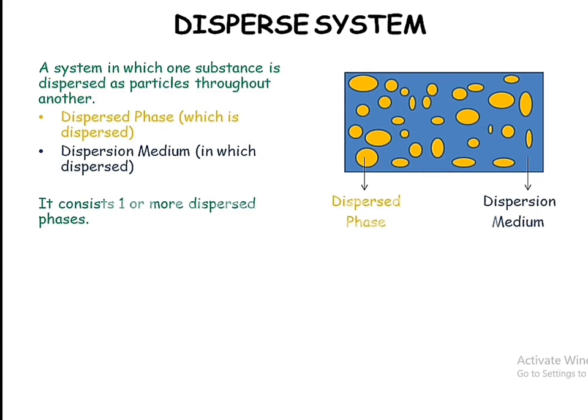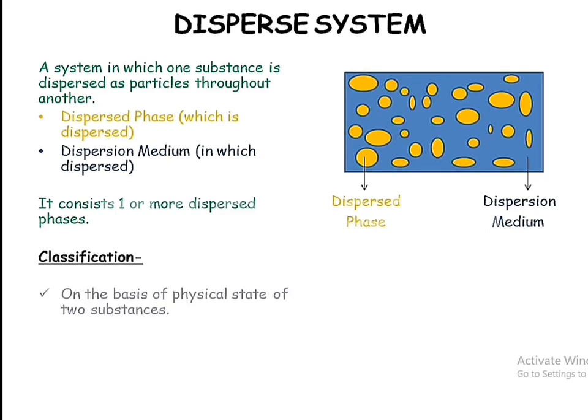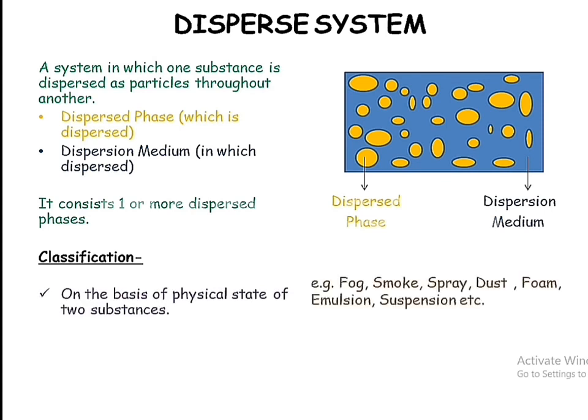Dispersed phases are classified on two bases. The first classification is on the basis of the physical state of the two substances. For example, fog, smoke, spray, dust, foam, etc. They all differ from each other because of different physical states of their dispersed phases and dispersion medium.